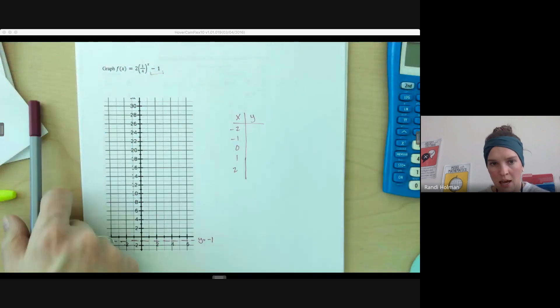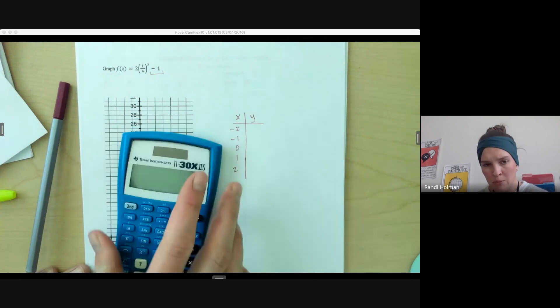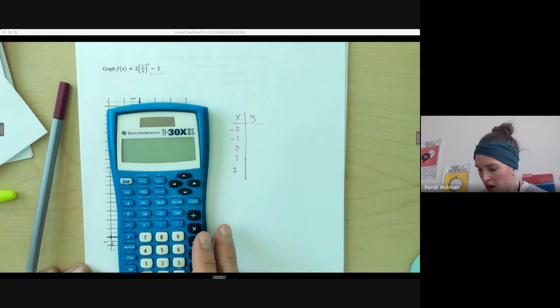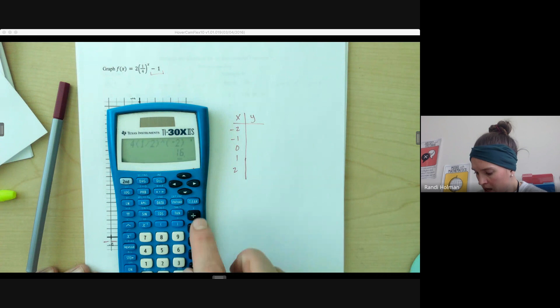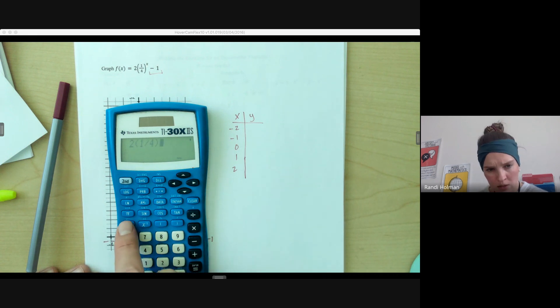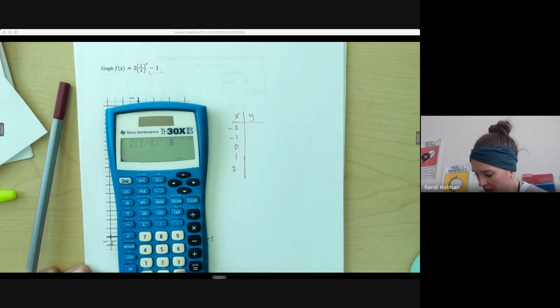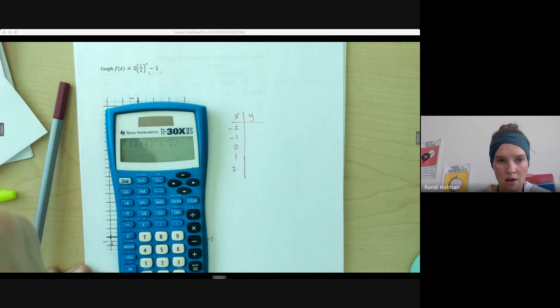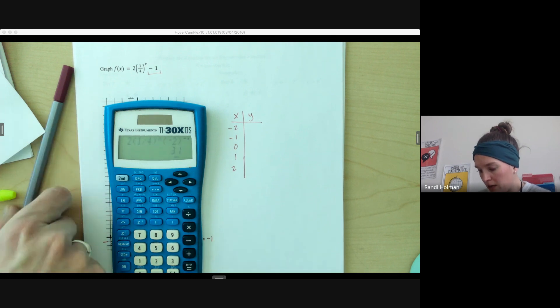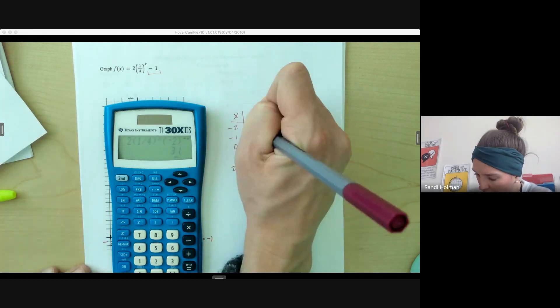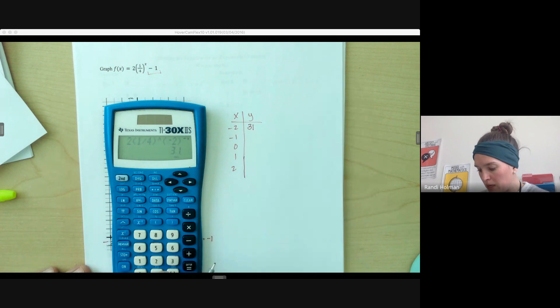So remember, the negative is going to take that and flip it. Let's practice this one with our calculator just so we get a little more comfortable with that. If I put in 2 times 1/4, make sure that's in parentheses, to the, the caret symbol is right here, negative 2. And if I'm thinking about this, negative is going to make it 4. So you'll have 4 squared. 16 times 2, that's 32 minus 1. I should get 31. But let me see if that matches. Yep. Think through that process. Make sure it makes sense.